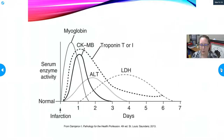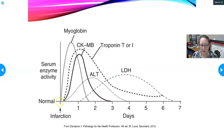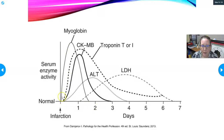Looking at this timeline graph: the patient has a heart attack and ideally shows up to the ER within a few hours. ALT and LDH are no longer used, so we won't worry about those. Myoglobin is detectable first; CK-MB rises shortly after, and troponin rises as well. If the patient arrives very early, myoglobin may be starting to elevate while CK-MB and troponin haven't yet reached detectable levels.